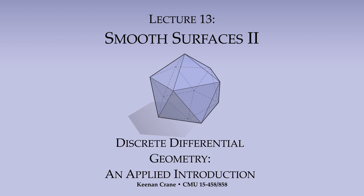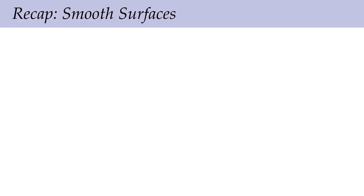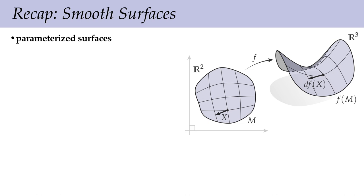Welcome back. We're going to continue our discussion of smooth surfaces. To recap what we already talked about: we said we're going to describe surfaces as parameterized surfaces. We'll think of the geometry of a shape as being described by a map F, which has a domain — some region in the plane we've called M — and it tells us at each point of M what location it sits at in three-dimensional space. This is very much like our notion of a parameterized curve, except now the domain is two-dimensional instead of one-dimensional.